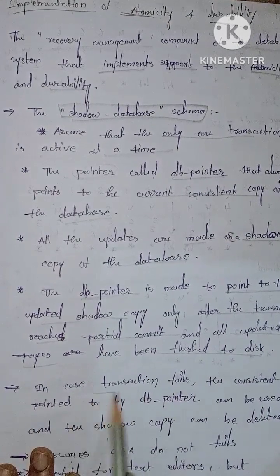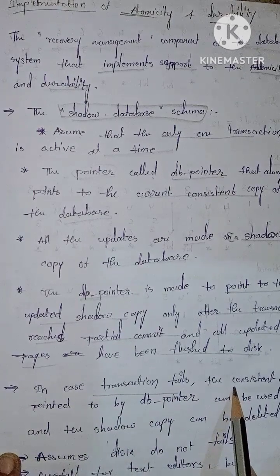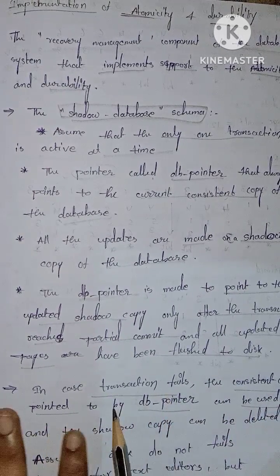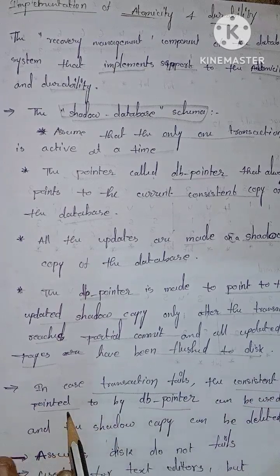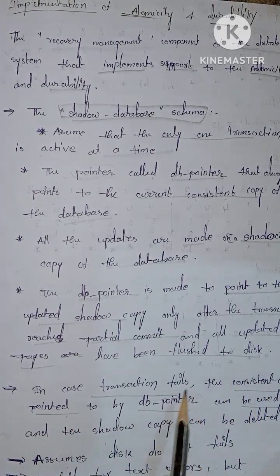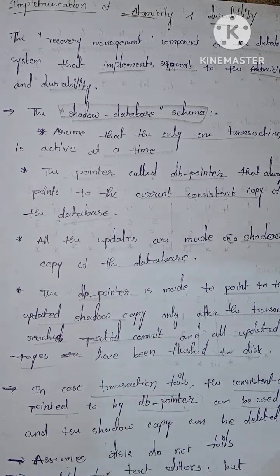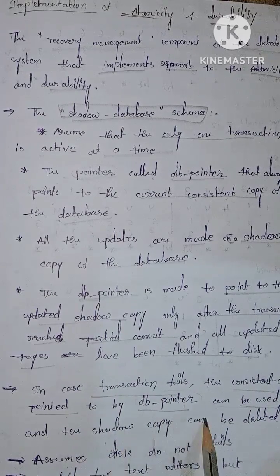In case the transaction fails, the consistent copy pointed to by the db-pointer can be used, and the shadow copy can be deleted.